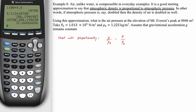What that statement looks like is rho over rho naught equals P over P naught. In other words, if atmospheric pressure is doubled, then the density of air is also doubled. Using this approximation, what is the air pressure at the elevation of Mount Everest peak, which is 8,846 meters above sea level?